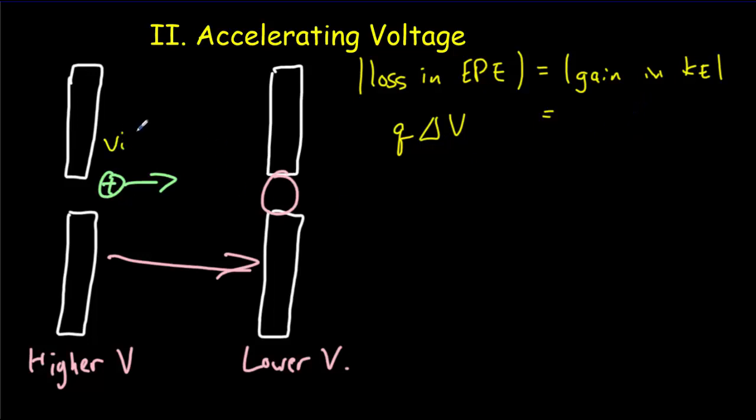and that's not necessarily true, but they will come in with a small speed compared to their final speed. And so to simplify the math, let's just say that the gain in kinetic energy is going to be a half mv final squared. Then if we solve for v final, it's going to equal 2q, change in voltage, divided by mass, all square rooted.